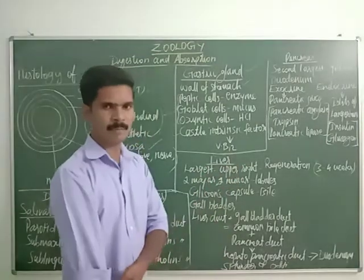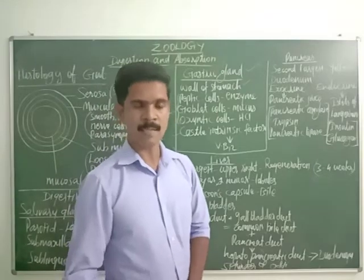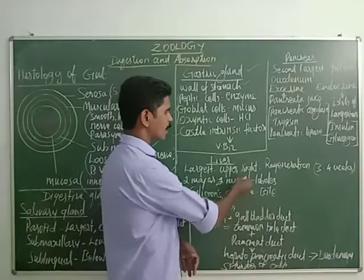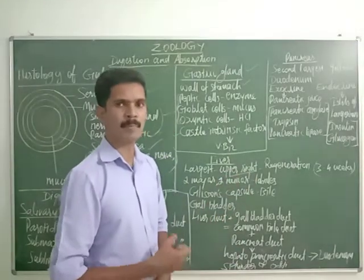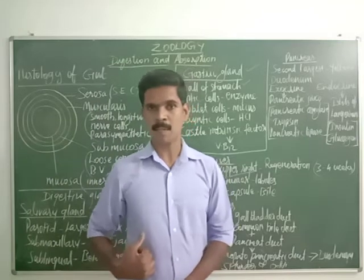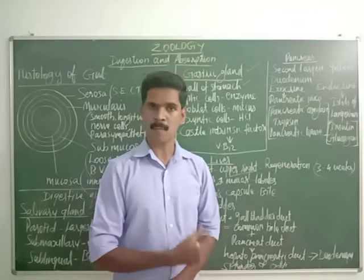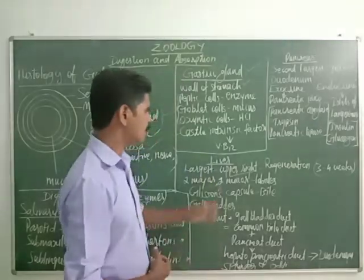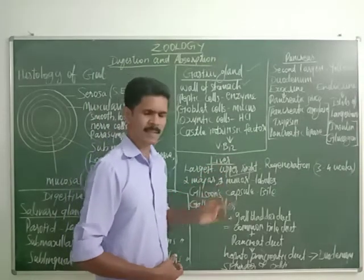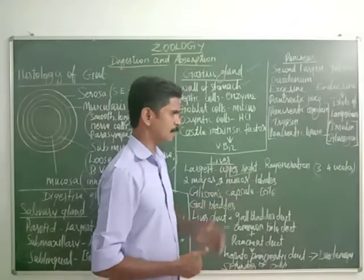The liver is the largest gland present in our alimentary canal. It is located in the upper right side of the abdominal cavity — the upper left side is occupied by the stomach. The liver is connected to the diaphragm.